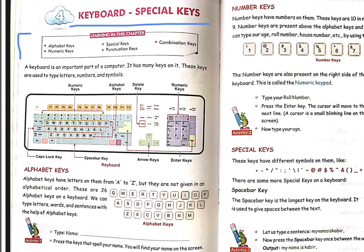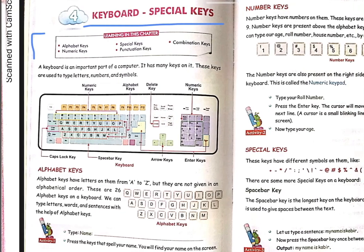Punctuation keys — when you write a paragraph, they help you place full stops, commas, inverted commas, and brackets correctly. These punctuation keys are also available on our keyboard. Combination keys mean combining any two things together — when you combine two things, that is called a combination key.